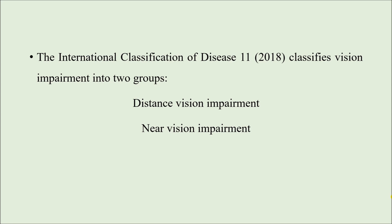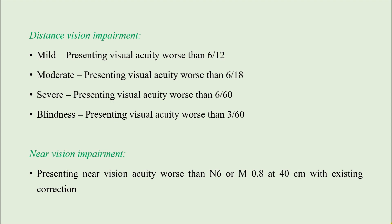We also have the International Classification of Diseases, 11th version — ICD-11, published in 2018. It classifies visual impairment as distance vision impairment, where people have difficulty seeing things far away, and near vision impairment, where people have difficulty seeing things close to them, for example reading a newspaper or books. According to ICD-11, we have mild, moderate, and severe distance vision impairment, and also complete blindness. Mild is worse than 6/12, moderate is worse than 6/18, and severe is worse than 6/60.